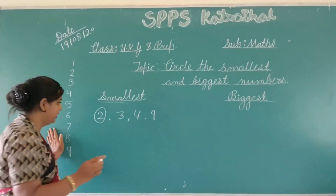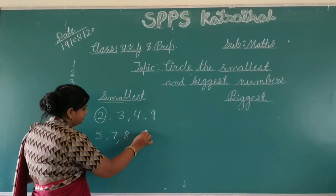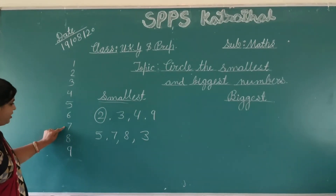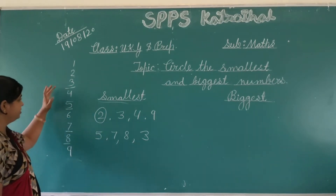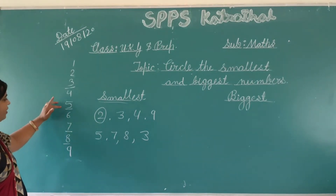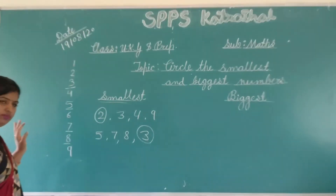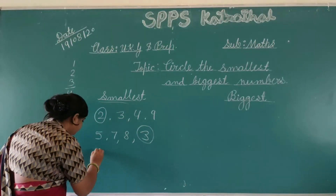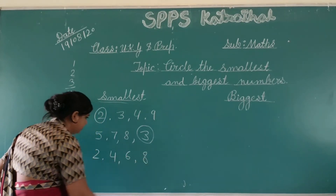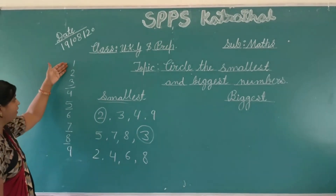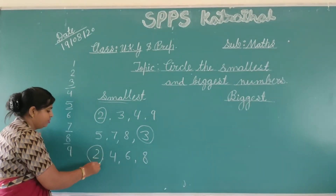1, 2. So, here we learn the smallest number. This is the smallest number.